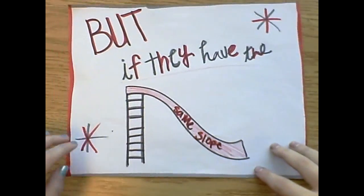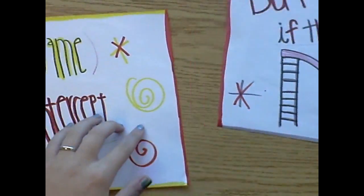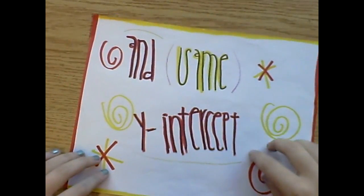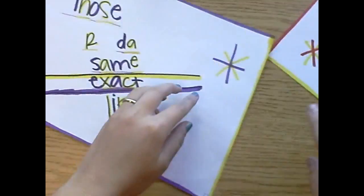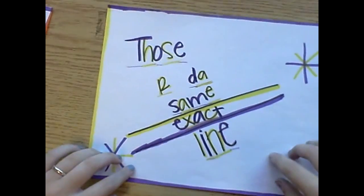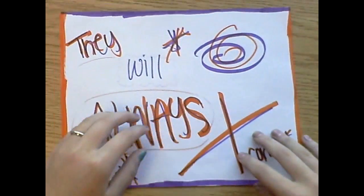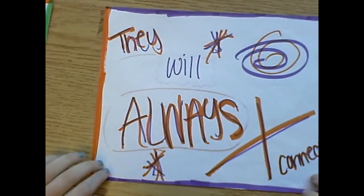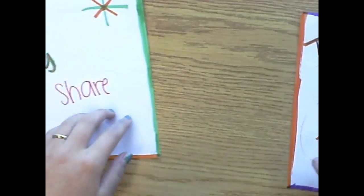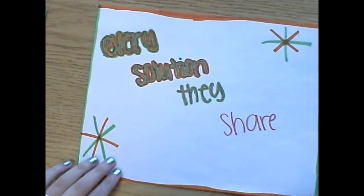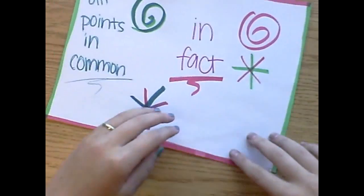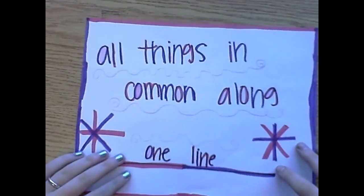But if they have the same slope and same Y-intercepts, those are the same exact lines — they will always connect. Every solution they share, all points in common in fact. All things in common along one line.